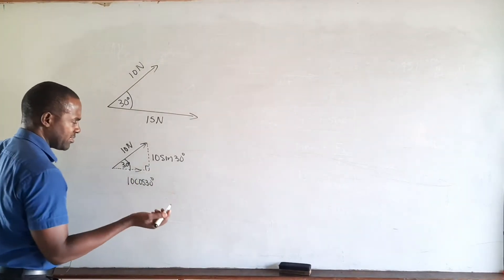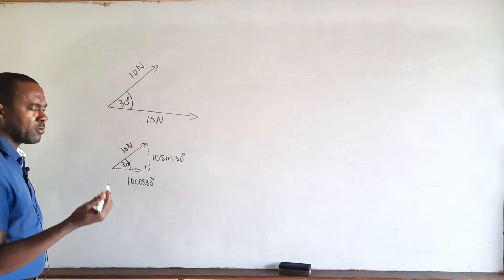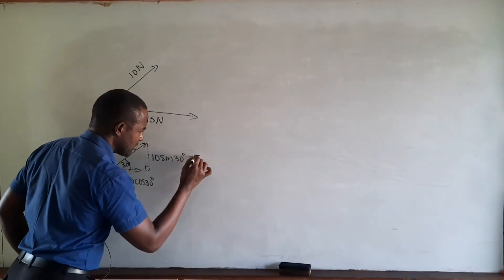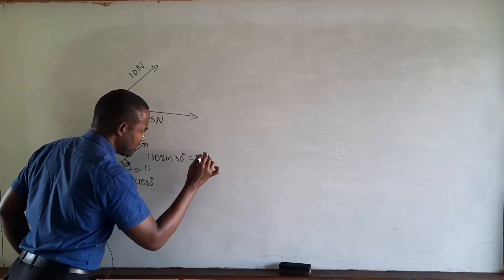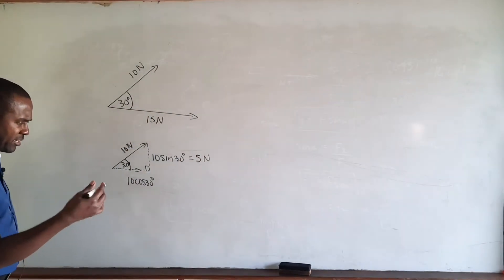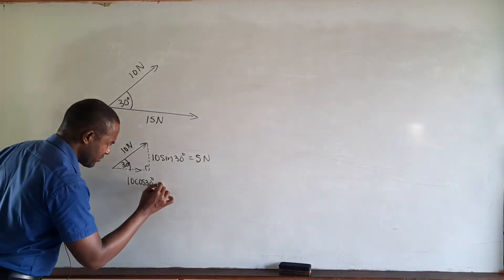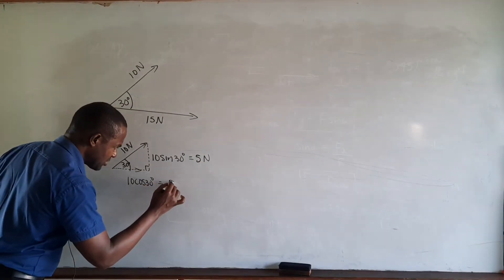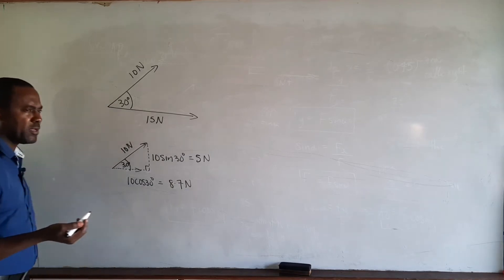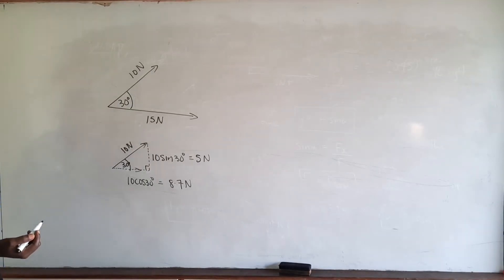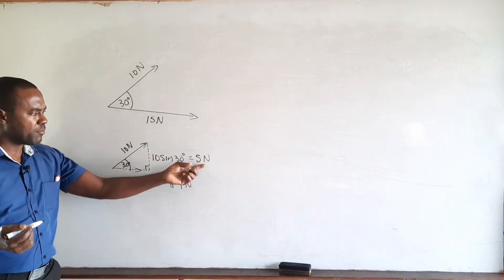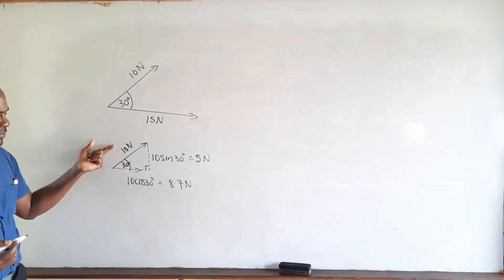Working these out: 10 sin 30 — sin of 30 is 0.5 — gives us 5 Newtons for the vertical component. And cos of 30 is 0.866, so 10 cos 30 gives us 8.7 Newtons to one decimal place for the horizontal component. These are the horizontal and vertical components of the 10 Newton force respectively.